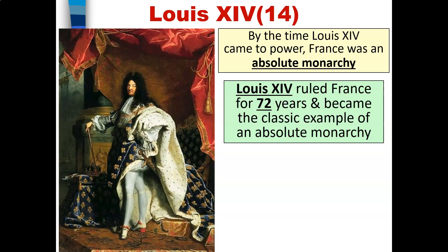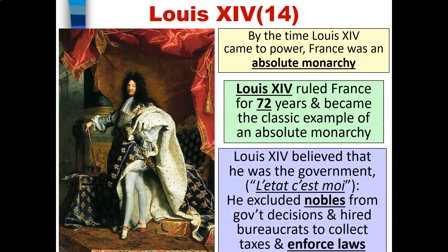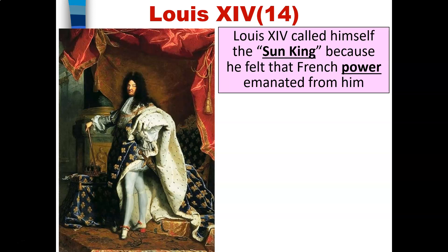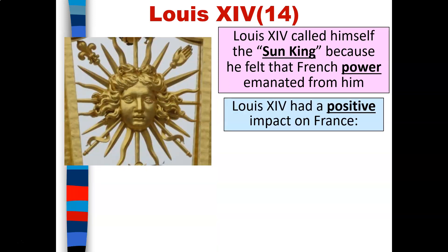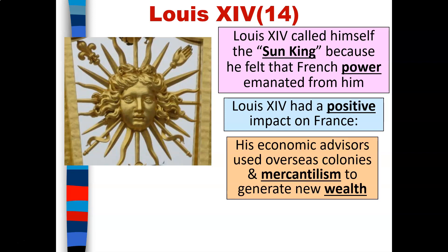By the time Louis the 14th came to power, France was already an absolute monarchy. Louis the 14th was able to rule France for 72 years and became the classic example of an absolute monarchy. Louis the 14th believed that he was the government. He excluded nobles from government decisions and hired bureaucrats to collect taxes and enforce laws. Louis the 14th called himself the Sun King because he felt that French power emanated from him.